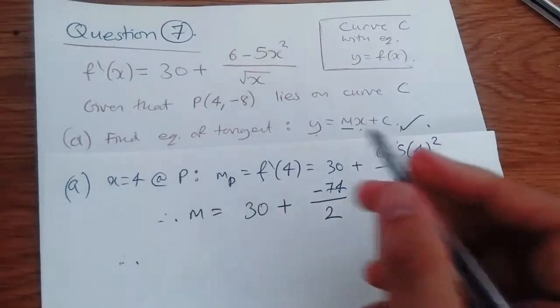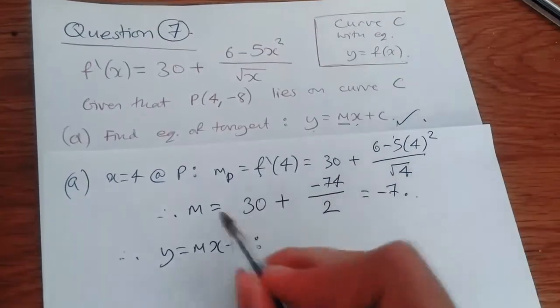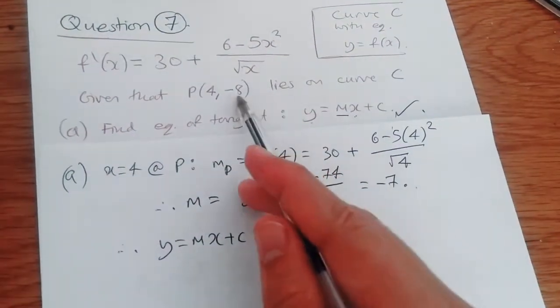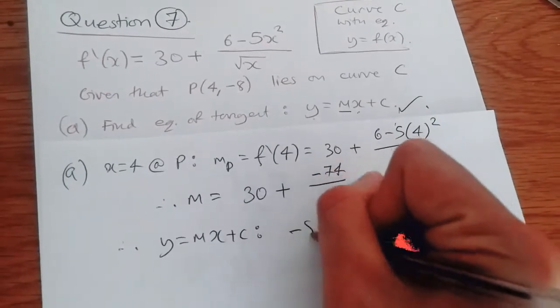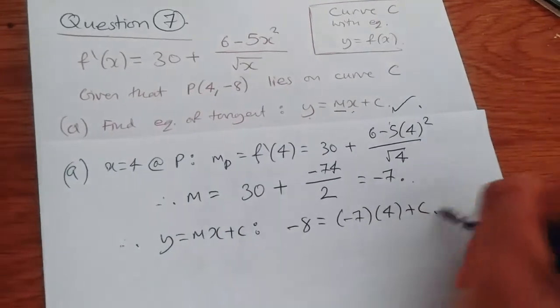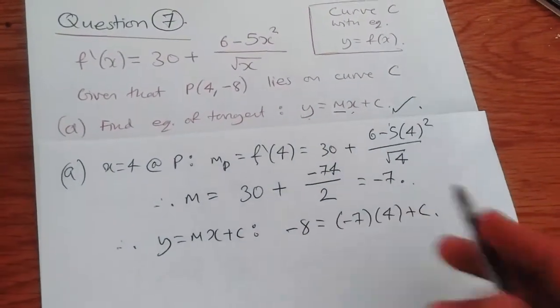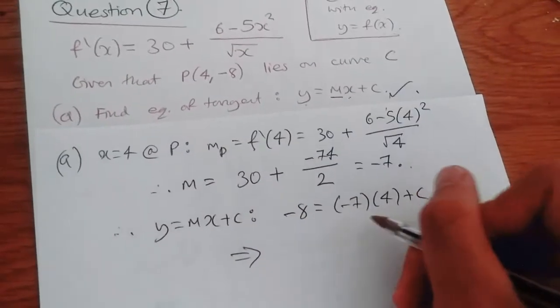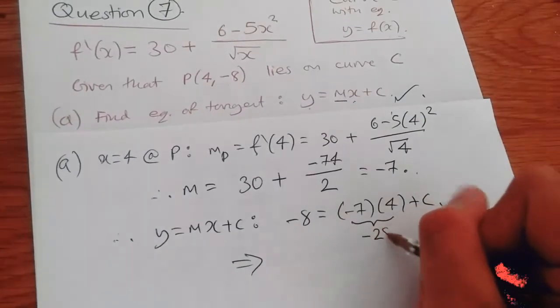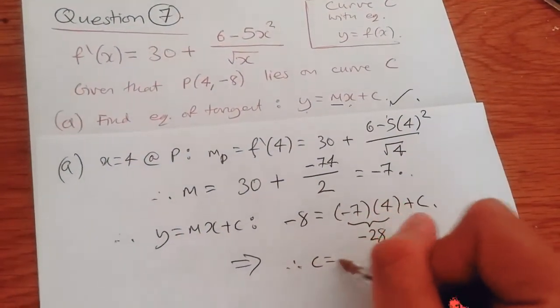So now what we do is using this y equals mx plus c to get the equation of a tangent. Plug everything back in, the coordinate of P and the gradient. So we've got minus 8 equals m which is minus 7, x which is 4, and then plus c. Do it so we can find the value c, rewrite this with m and c and we're done. We know these two, minus 7 times 4 is minus 28. Plus it across, so we're going to therefore get c equals 20.